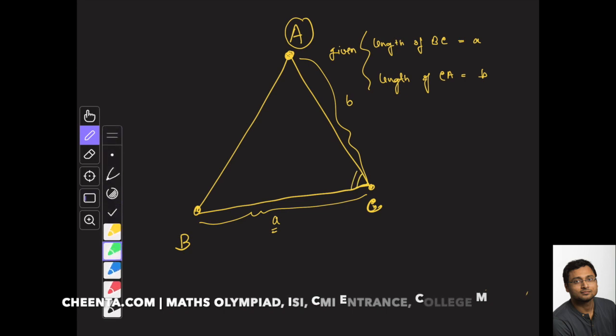Another thing is given: this angle right here is 2π over 3. Our goal is to find out the length of CD, which is the angle bisector.